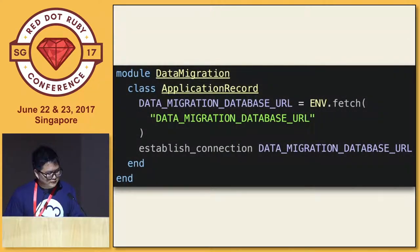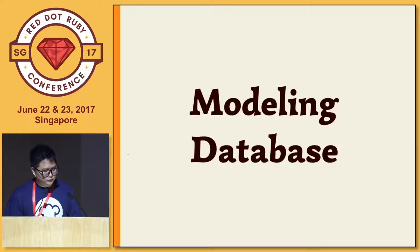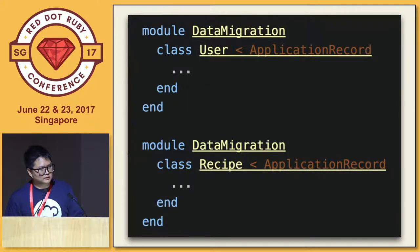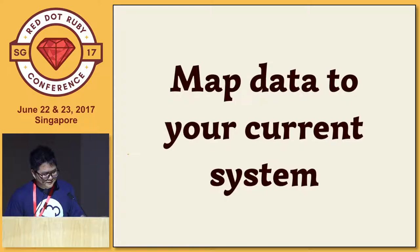You can connect to the database through an environment variable, and set the environment variable accordingly for development, staging, and production. Then you can start modeling your database. The data you get from the provider is in all kinds of formats, and you just need to map them to your existing system — in Cookpad's case, users, recipes, and other things. With just these five Rails methods you can basically model anything.